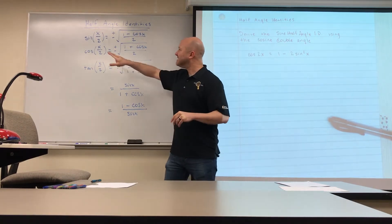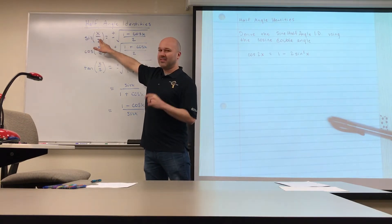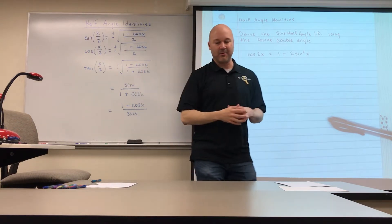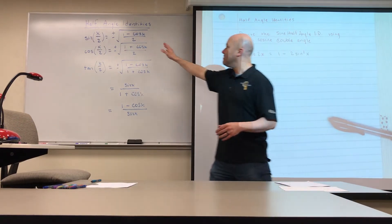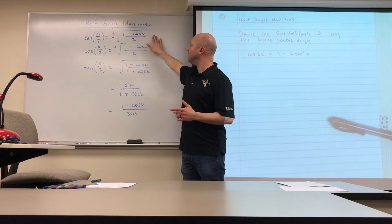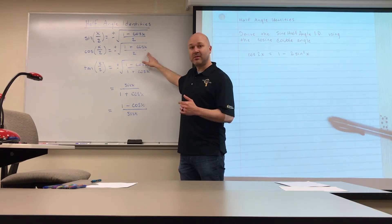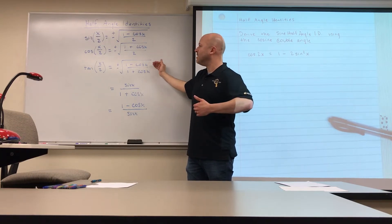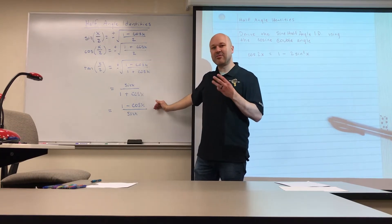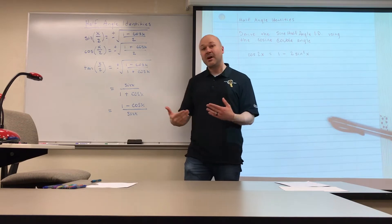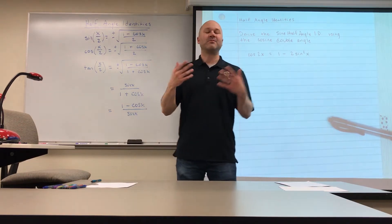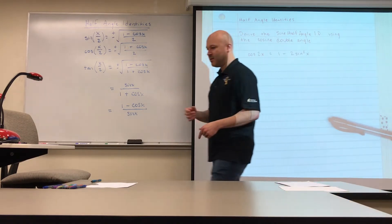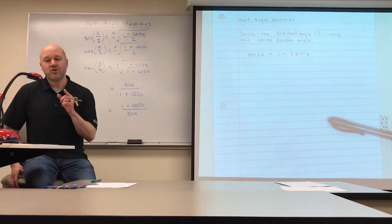I'm going to derive sine's half angle — that is, what happens if I take an angle, cut it in half, and evaluate the sine of that value. Hopefully you can see that cosine's half angle is very similar, so if you can memorize the first one you should be able to memorize the second. Tangent's half angle does have three variations that we need to be comfortable with.